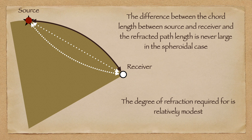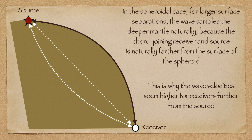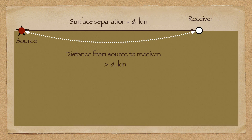Not only is the path between source and receiver shorter in the spheroidal case, but it occurs at depth within the spheroid, where the P and S wave velocities are higher. So the P and S waves have less distance to travel, but they travel it at a higher velocity. Although the wave path traveled by the P and S waves is longer than the straight-line distance, it is not significantly so because the effects of refraction are relatively modest. The greater the surface separation between source and receiver, the more significant the advantage in terms of material velocity is. The P waves travel faster and faster the further away the receiver is. In the flat-Earth case, the shortest path between source and receiver is always along the surface of the Earth, where seismic waves are slowest. This model cannot, therefore, explain the observations.